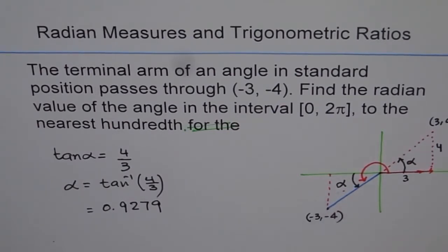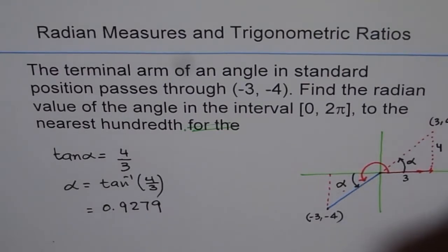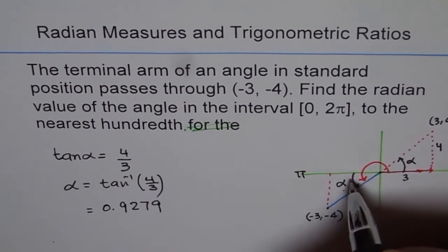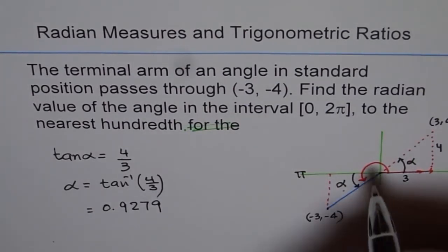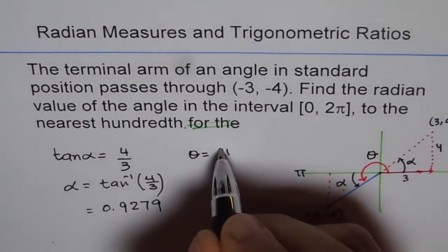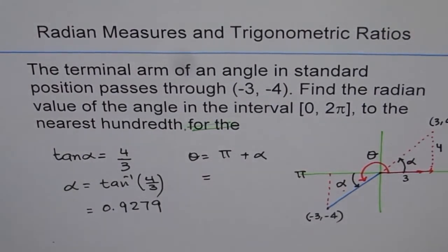Now what is the angle? The angle is π plus alpha. Since this is 0, and from here to here we have π. So our angle is π plus alpha. So we should add π to it. So let's say the angle θ is equal to π plus alpha. So which is equal to, we will add π to it. And it gives us 4.0688.